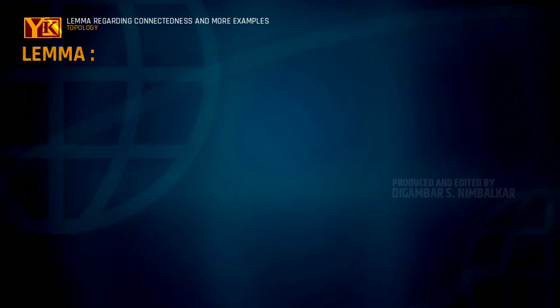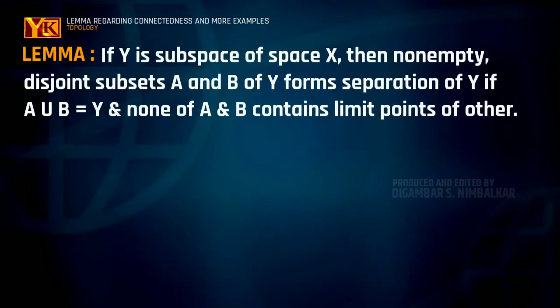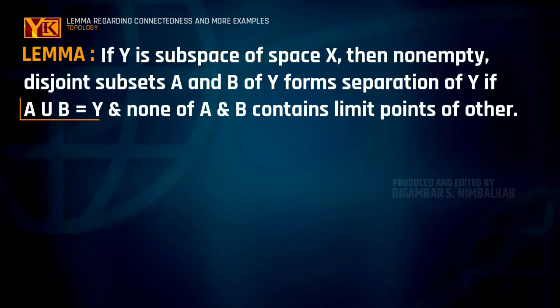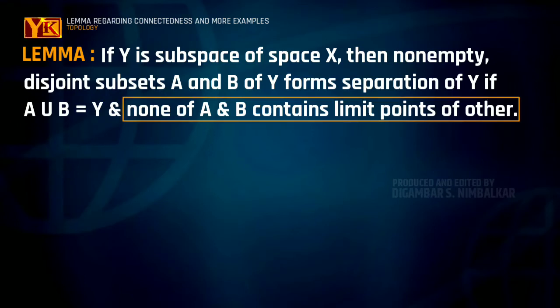Welcome. This is another video on connected spaces. In this video we'll see one lemma regarding connected spaces and more examples. The lemma states: if Y is a subspace of topological space X, then a separation of Y is a pair of disjoint non-empty sets A and B whose union equals Y, such that none of these sets A and B contains the limit points of the other.